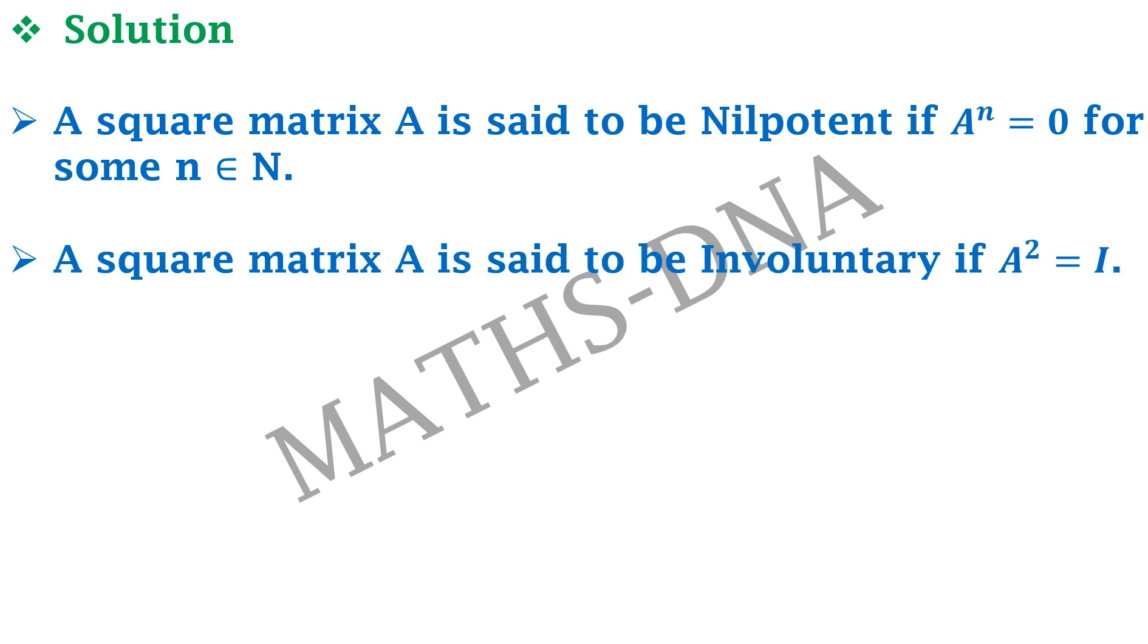Second, a square matrix A is said to be involutory if A square equals to I, that is identity matrix. And third, a square matrix A is said to be idempotent if A square equals to A.